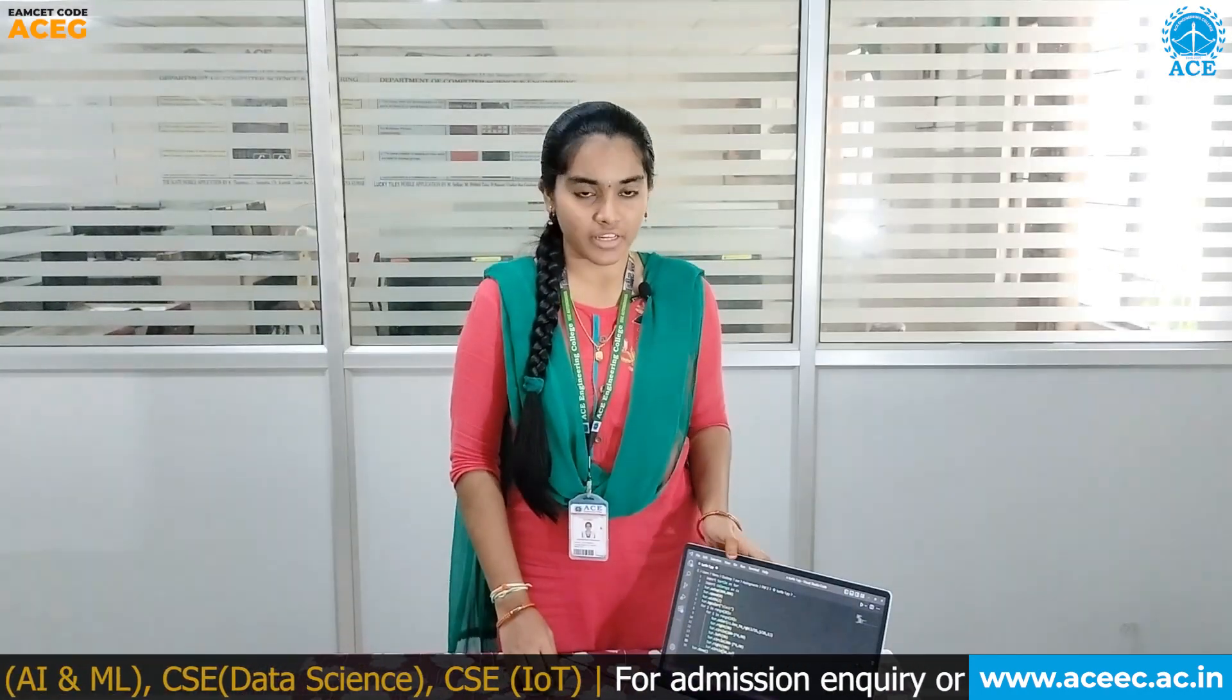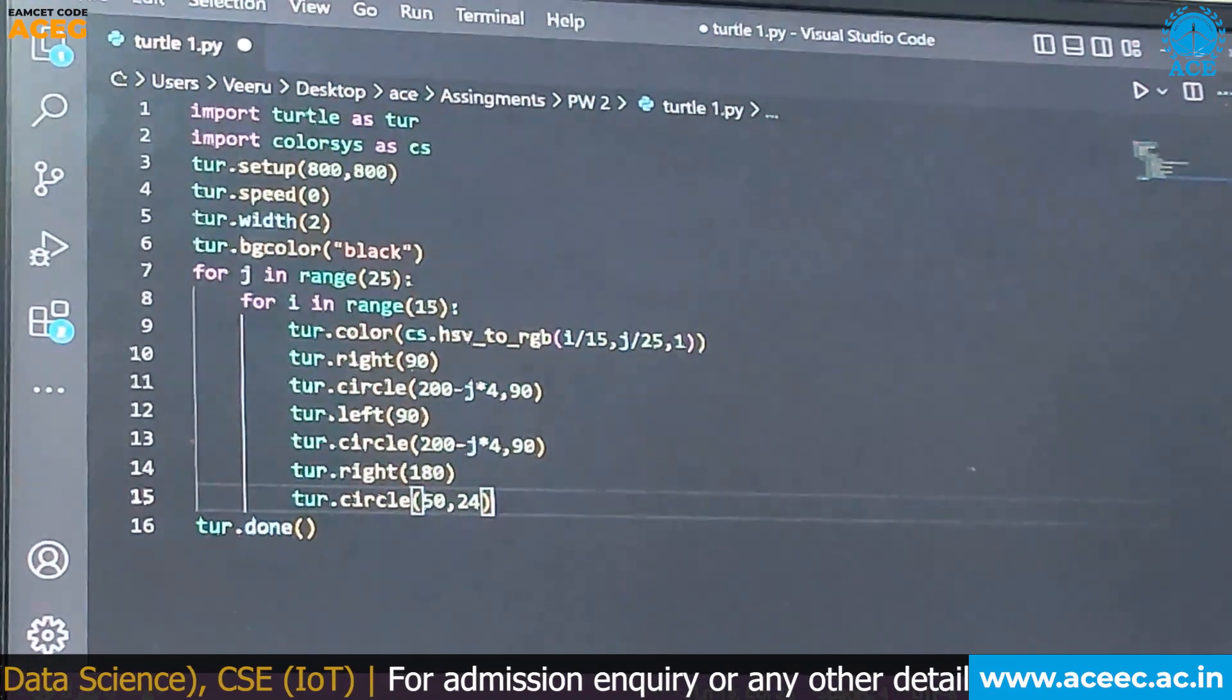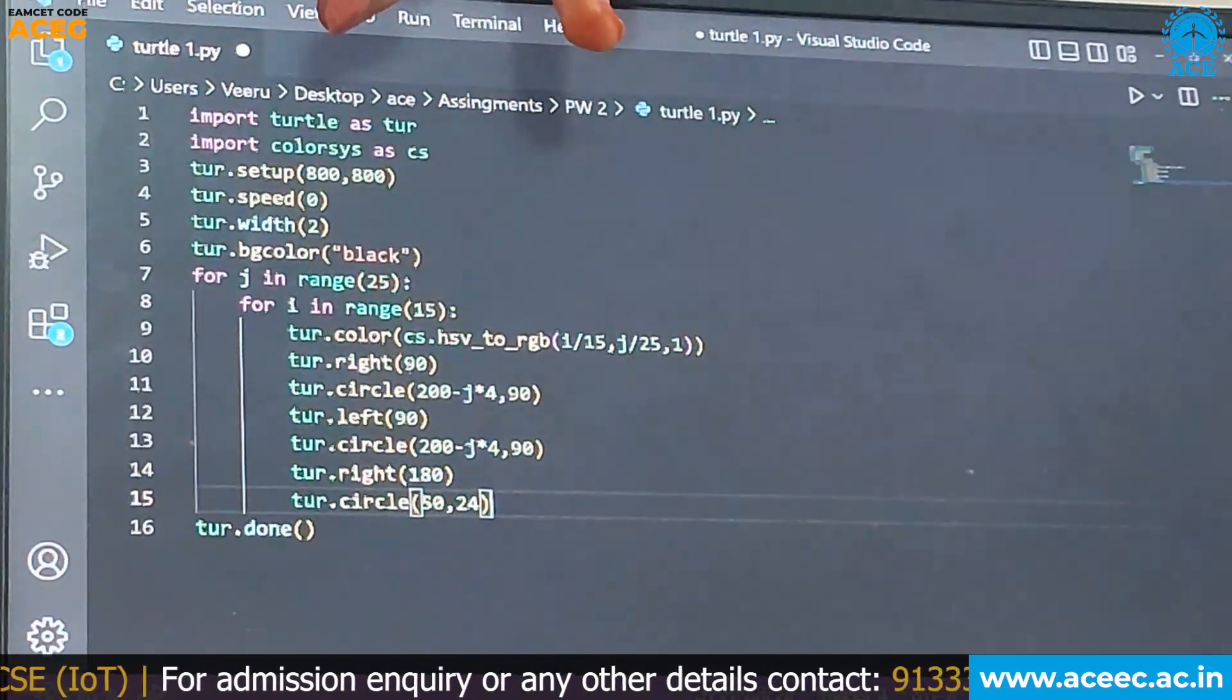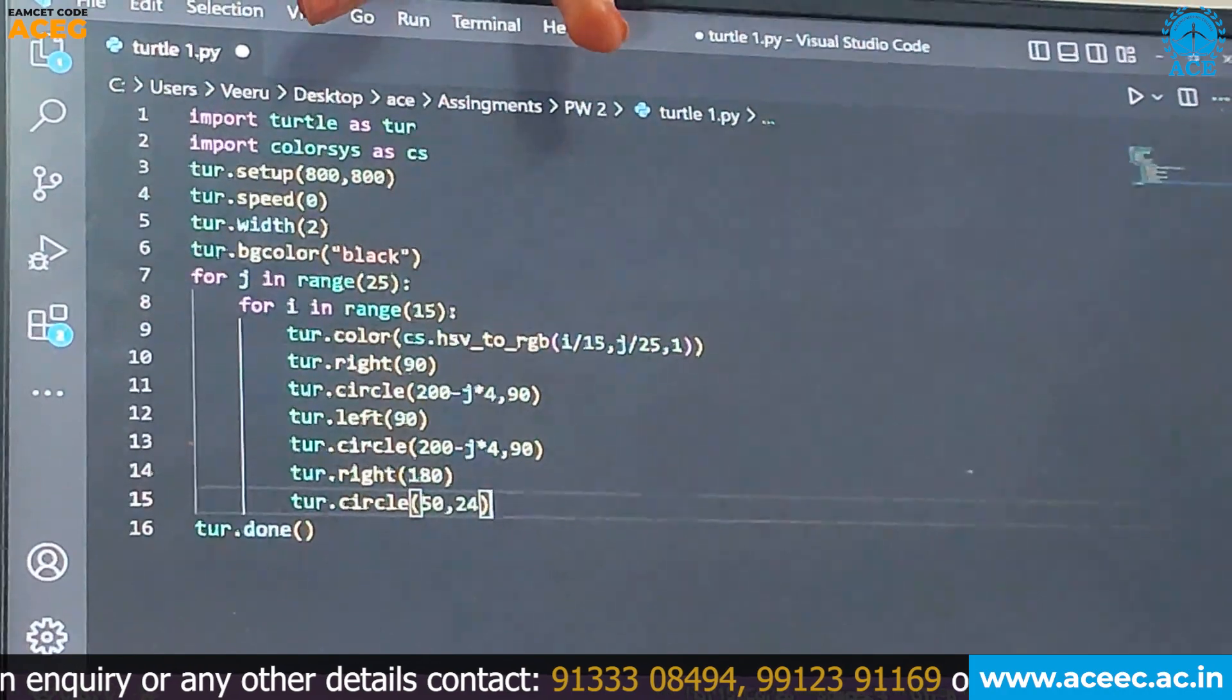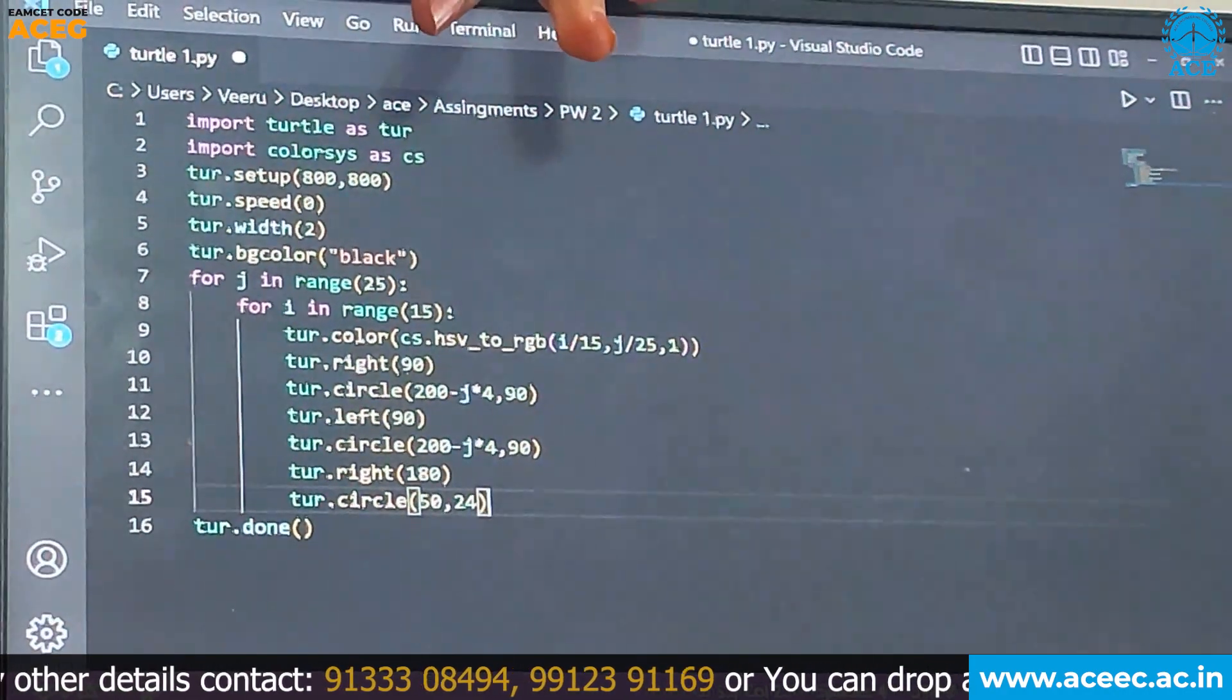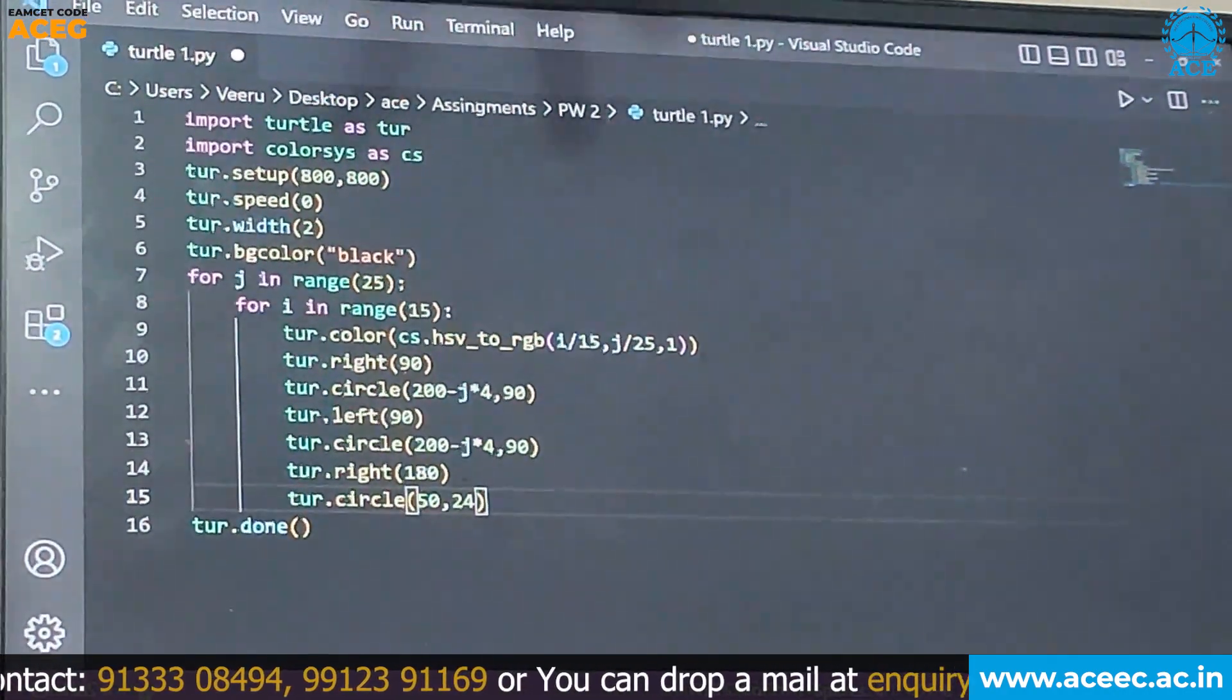So as my friend explained, we used some of the attributes from the Turtle module like Setup, Speed, Width, and BGColor. We can change the values for the attributes.